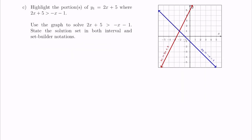In Part C, we need to highlight the portions of y1 equal to 2x plus 5 where 2x plus 5 is greater than negative x minus 1. Anywhere we have 2x plus 5 we're talking about the y1 value, and anywhere we have negative x minus 1 we're talking about the y2 value. Remembering that y1 is the red line and y2 is the blue line, we're looking for where the y values on the red graph are greater than the y values on the blue graph. This is where the interactive graph can assist us.